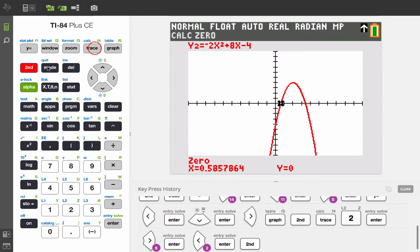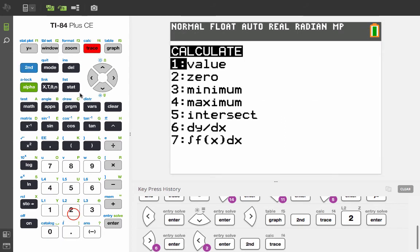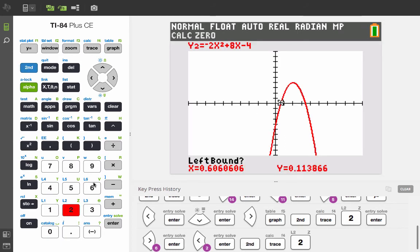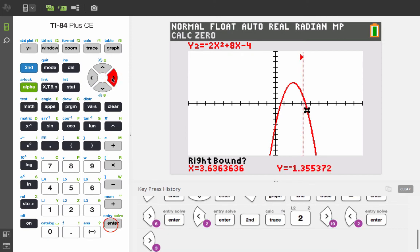We'll find the other one, zero, and the left bound will move over closer to the second zero. Nope, went a little too far, so let's go back. Enter. Enter. And then we'll move to the right. Enter. Take a guess. Enter. And that second zero is at about 3.41.